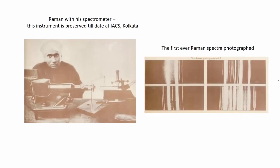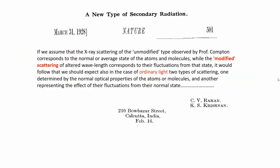Raman was very enthusiastic. You can see a beautiful picture of Raman with his spectrometer — this instrument is still preserved to date at IACS Kolkata. Towards the right side you will also see the first ever Raman spectra photographed using that instrument. This is the famous Nature paper which forms the basis on which the Nobel Prize was awarded. They make a comparison with the Compton effect and call this new radiation a modified scattering. They distinguish the two types of scattering of ordinary light, and you can clearly see Raman and Krishnan are the authors, with the address at the famous Bow Bazaar Street in Kolkata.